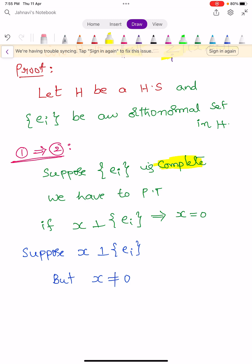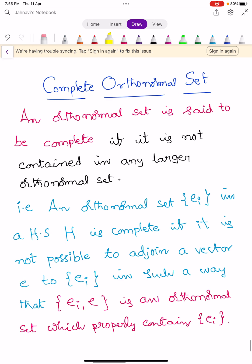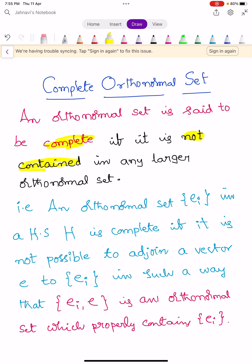Before going to prove this, let us see the complete orthonormal set definition. An orthonormal set is said to be complete if it is not contained in any larger orthonormal set. That is, an orthonormal set {E_i} in H is said to be complete if it is not possible to adjoin a vector E to {E_i} such that {E_i} ∪ {E} is an orthonormal set which properly contains {E_i}.